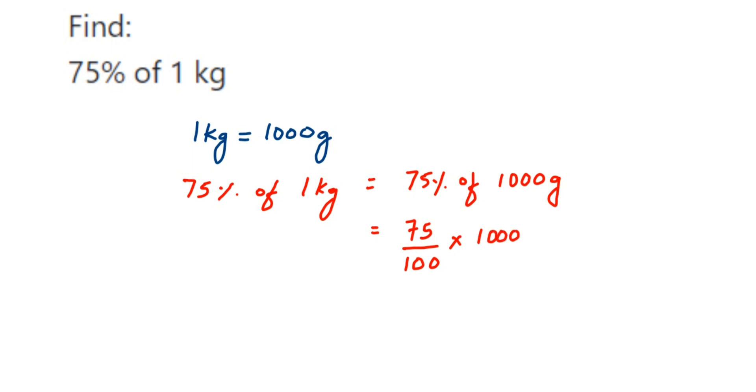Cancel the zero, so cancel this in 100 table. We got a 10 here, so 75 into 10 is 750. So 750 grams is the answer. I hope this question is clear.